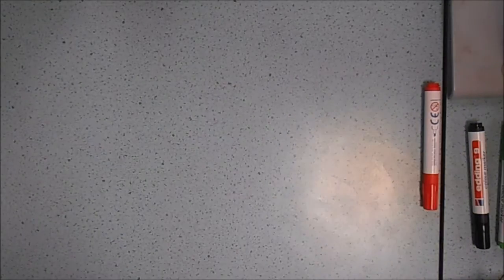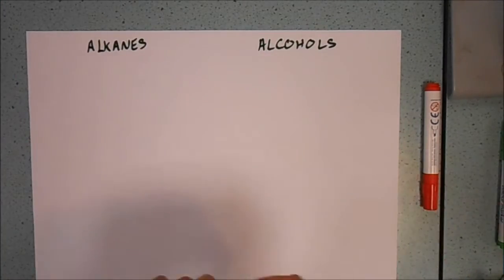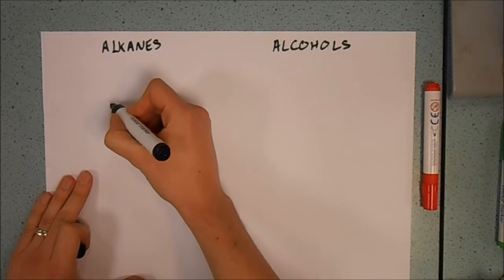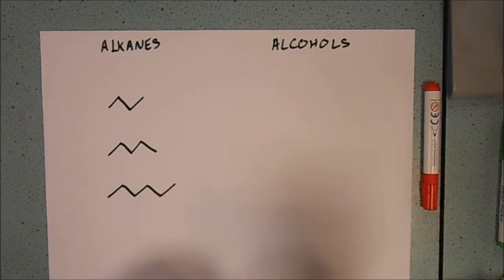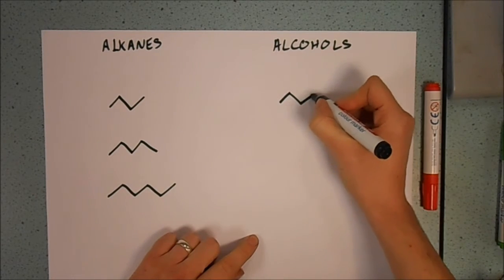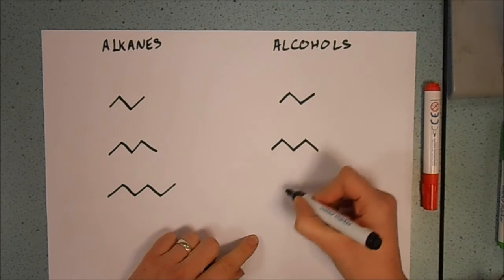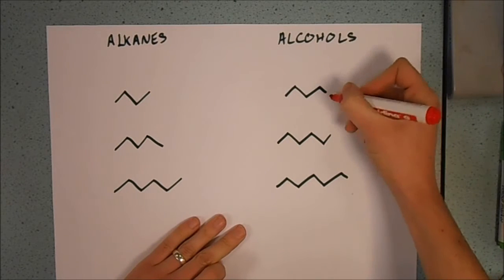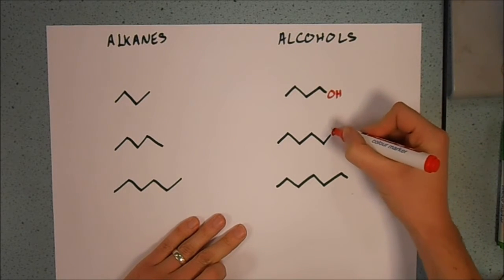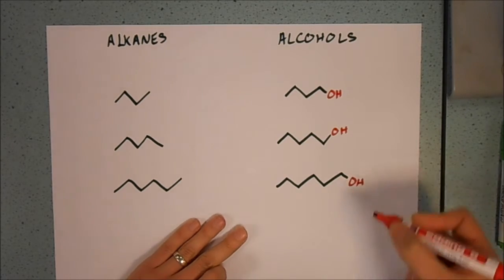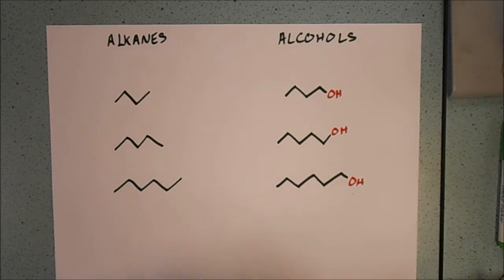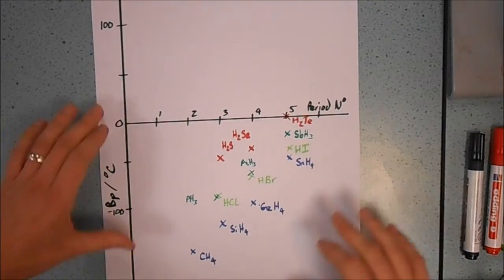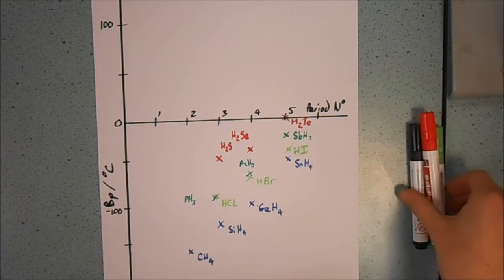So that leads us to wondering, what is it about the alcohols? If you draw the skeletal formula of some of the alkanes and then you do the same for the alcohols, you'll see that there's only really one difference. And that is that we have an OH group on the end. So this boiling point change must be something to do with the OH group. We can see this in other compounds as well. Here's some examples.